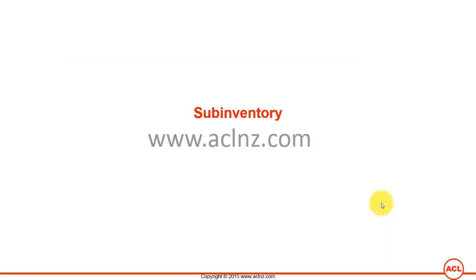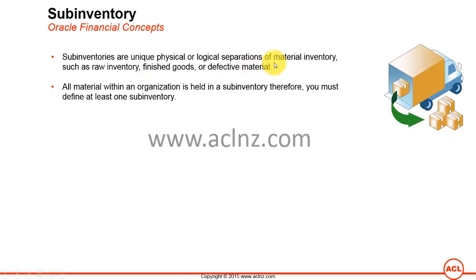Sub-inventories are unique physical or logical separations of material inventory, such as raw inventory, finished goods, or defective materials. Within a warehouse you maintain multiple sub-inventory locations, each with a unique identification code or name. For example, raw material sub-inventory can be called RI, finished goods FG, defective materials DM, and returns RM. You can further subdivide a sub-inventory using locators.